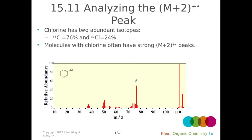Let's see what other pieces of information we can get from our spectrum. We learned that our molecular ion peak tells us the molecular weight of our compound, and the M+1 peak can tell us how many carbon atoms we have. The M+2 peak, or molecular ion plus two AMUs, can tell us whether we have a chlorine or a bromine. Chlorine has two abundant natural isotopes: Cl-35, which makes up 76% of naturally occurring chlorine, and Cl-37, which makes up 24%.